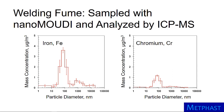With ICP-MS, we can also obtain information on other elements at the same time. The plot on the right shows the size distribution for chromium. Although these data provide a wealth of information, they are time-intensive and costly to obtain.